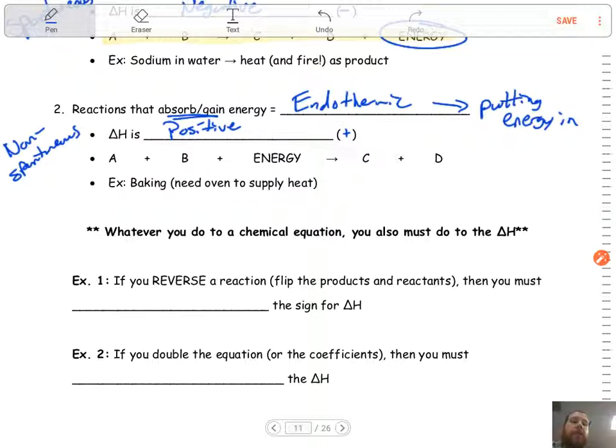All right, so something like baking, right? You need the oven to supply the heat. You can put all the ingredients together, you know, when you want to bake a cake or whatever, but nothing's going to happen.